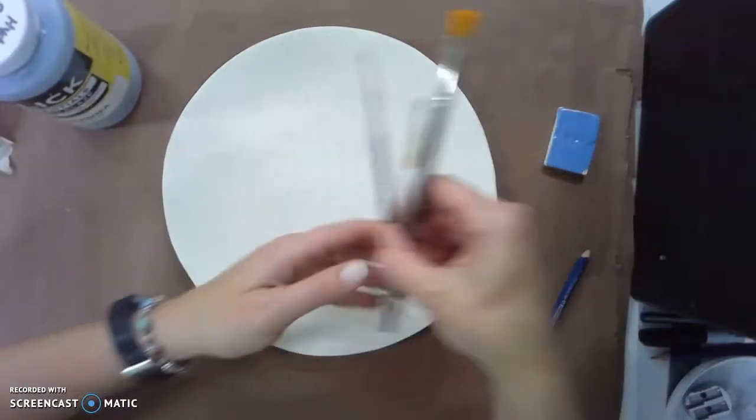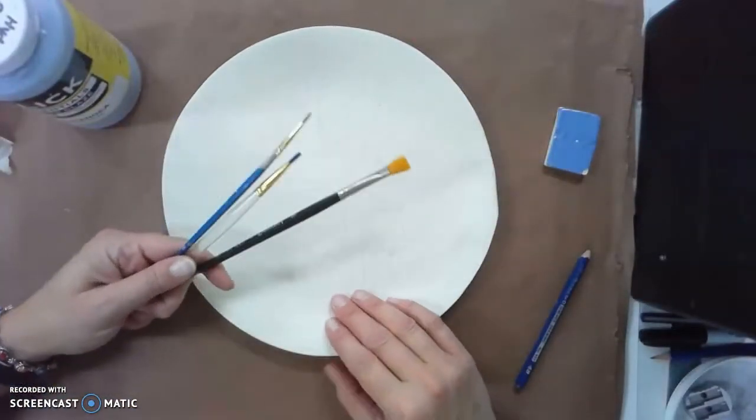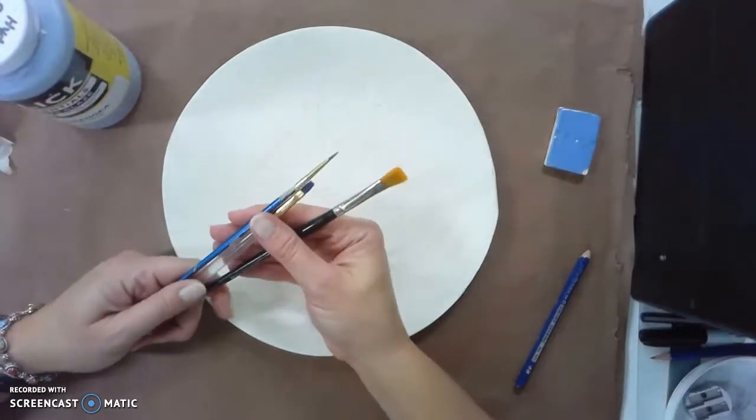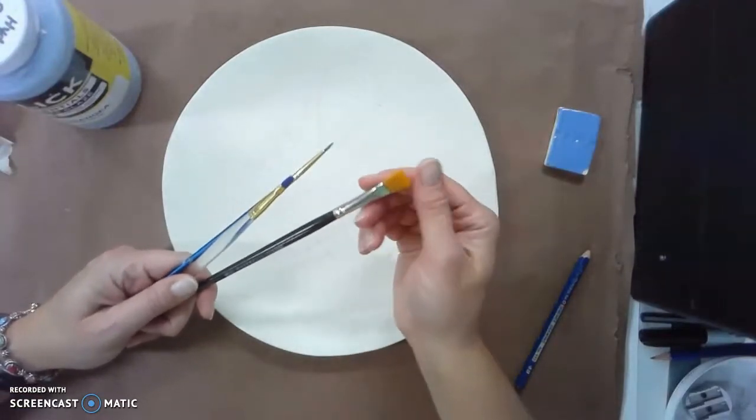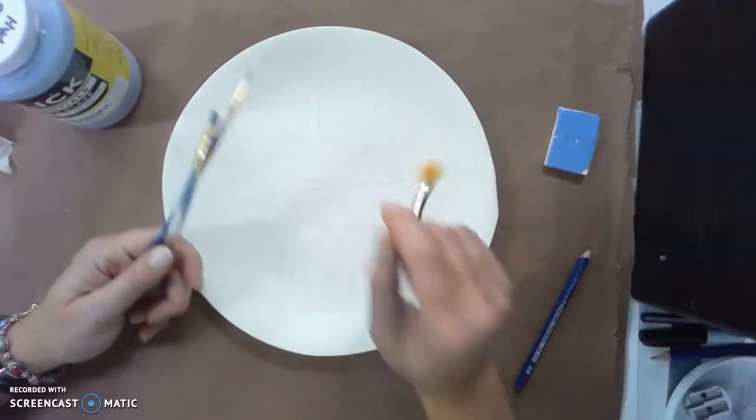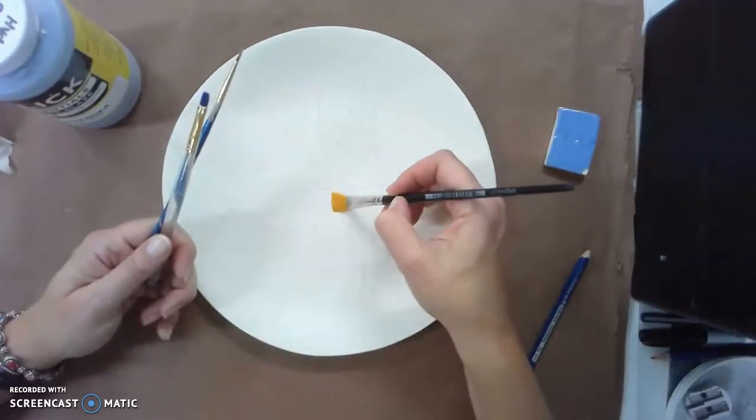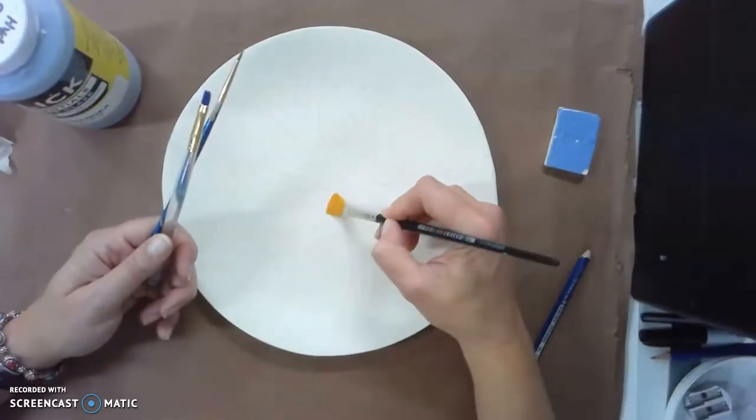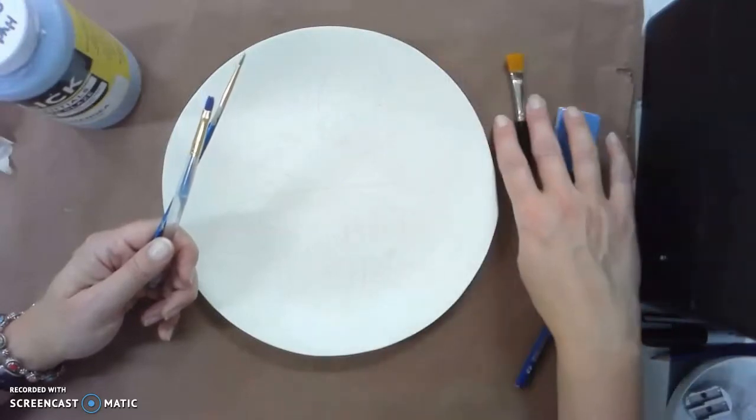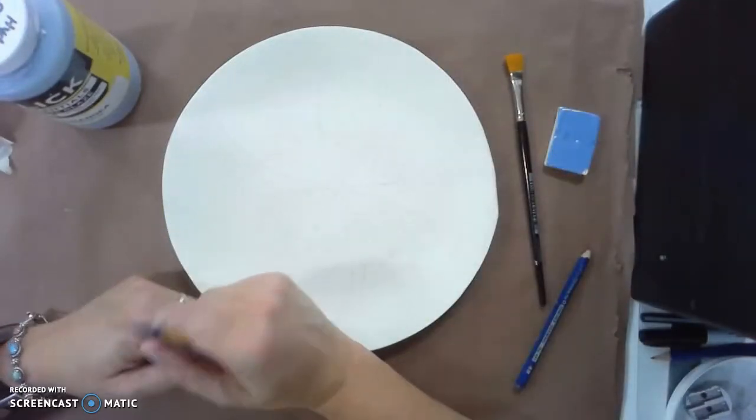I want to talk about choosing the correct size of paintbrush for the area that you're working on. It would not make any sense for me to use this great big huge paintbrush for this tiny little delicate area inside here. I would end up slopping glaze where I don't want it.